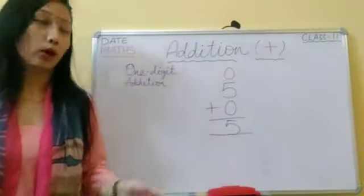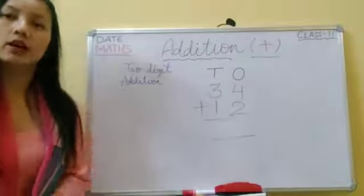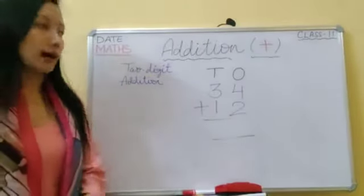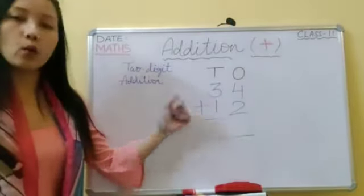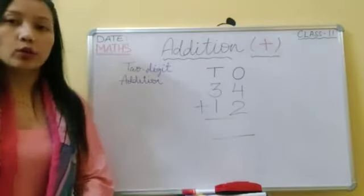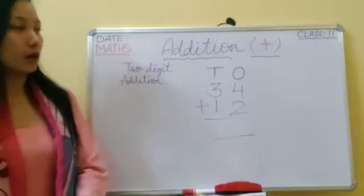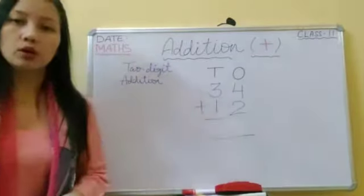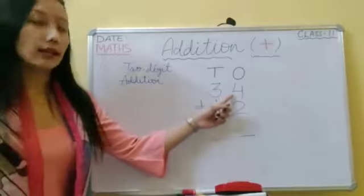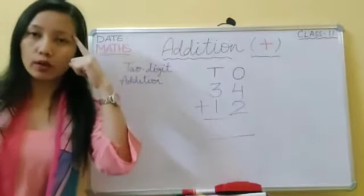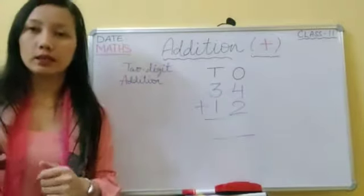Next, two digit addition. Here you have to add two digit numbers. In our ones place we have four and two, and in our tens place we have three and one. Whenever you add, always start from the ones digit. Four plus two — four is greater than two, so keep the greater number four in your mind and count on: five, six. Four plus two is equal to six.